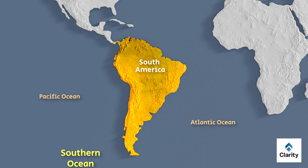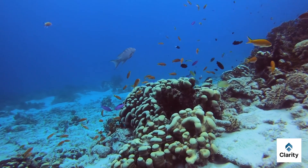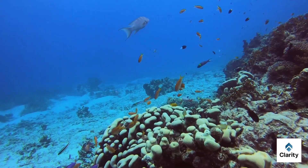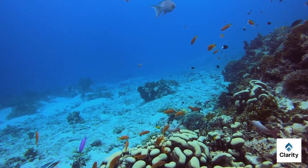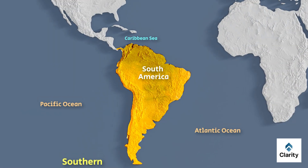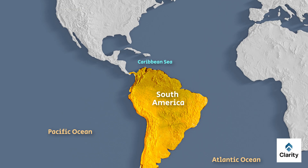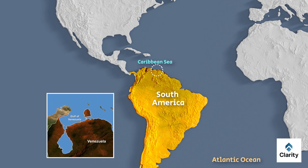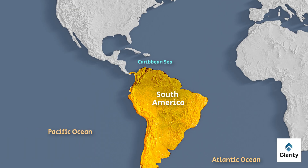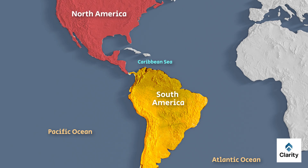In the north, South America is bordered by the Caribbean Sea. The Caribbean Sea is part of the Atlantic Ocean and has warm tropical waters. It contains many islands and supports rich marine life. The northern coast also has important gulfs and bays such as the Gulf of Venezuela. South America is connected to North America by the Isthmus of Panama, a narrow strip of land that separates the Caribbean Sea from the Pacific Ocean.